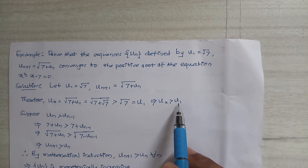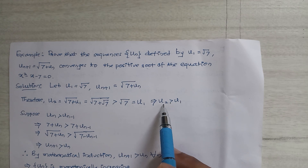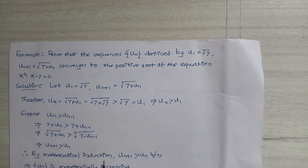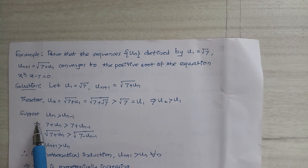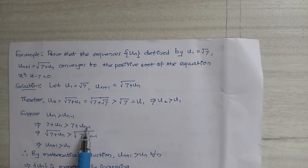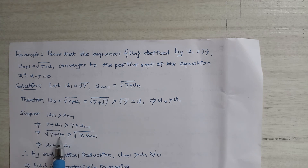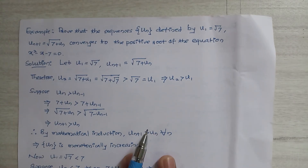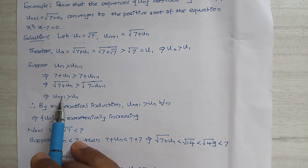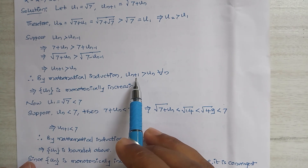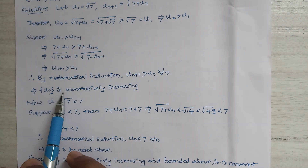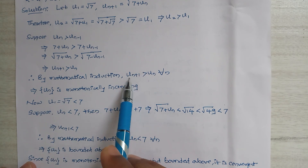Therefore u2 > u1, so the result is true for n = 1. Assume the result is true for n, i.e., suppose un > un-1. Then 7 + un > 7 + un-1, and taking square roots: √(7 + un) > √(7 + un-1), that is, un+1 > un. Therefore by mathematical induction, un+1 > un for all n, so un is monotonically increasing.